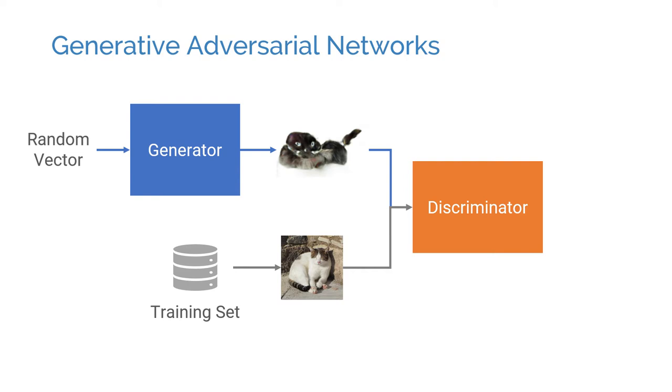The discriminator gets either a randomly sampled image that actually comes from the dataset, or a synthetic sample that is generated by the generator. Given this input, it outputs the probability that the input is a real training example rather than a fake sample generated by the model.